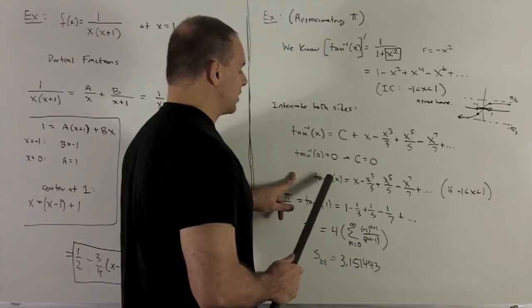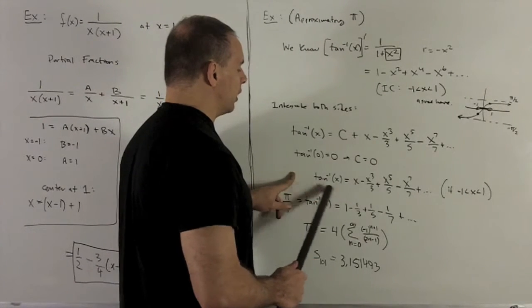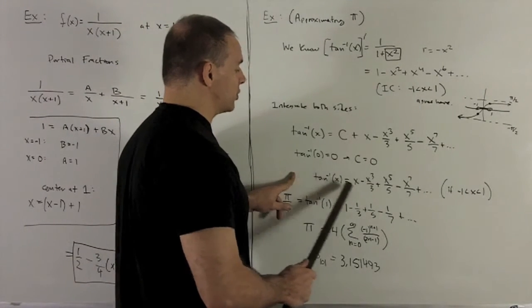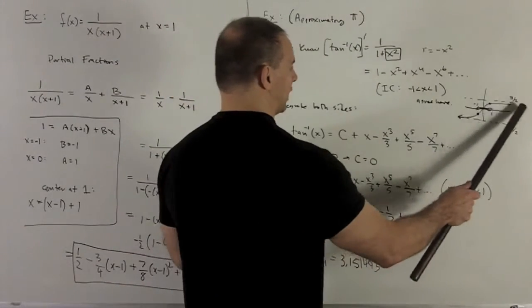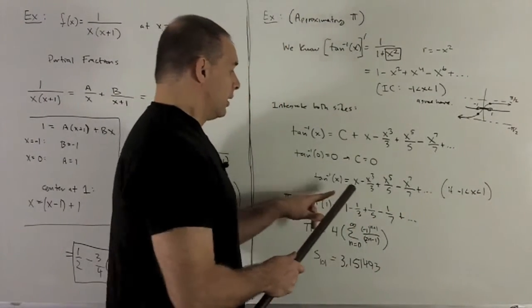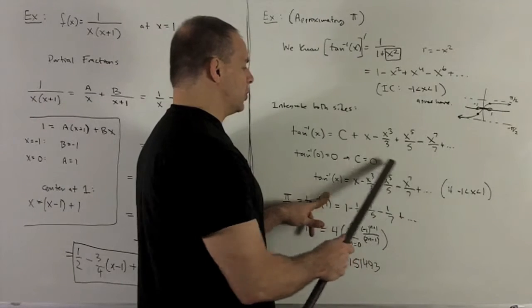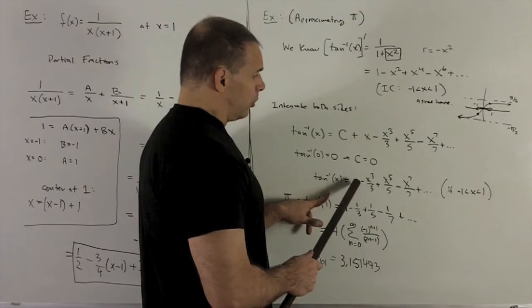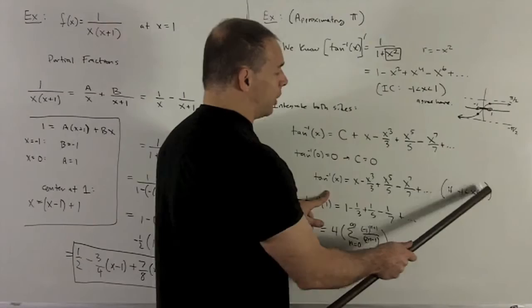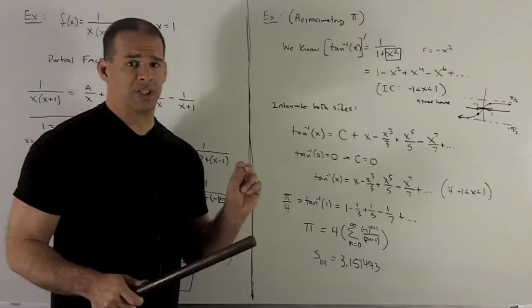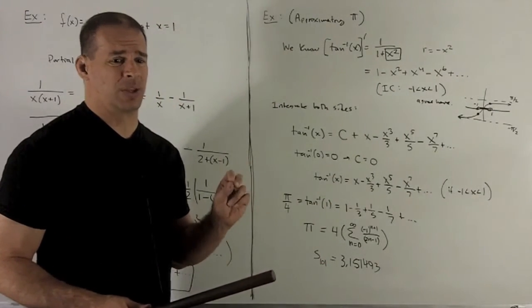Now, tan inverse of x, that's defined on the entire real line, and in fact, it's continuous in its whole region. Graph looks just like this. This thing here is also going to be continuous in the region, but we're only defined minus one to one. So its region is minus one to one. It's going to be continuous on that region.